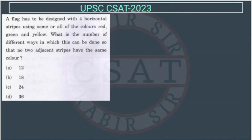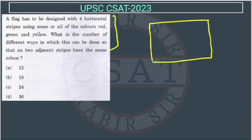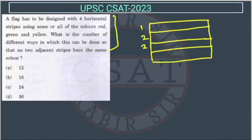This question is from permutation and combination. A flag has to be designed with four horizontal strips using some or all of the colors — red, green, and yellow. We have to find the number of different ways in which this can be done.